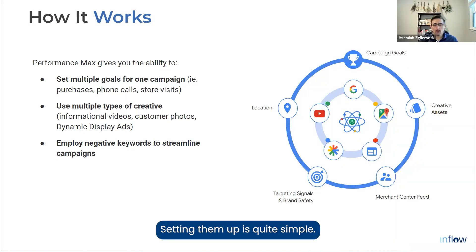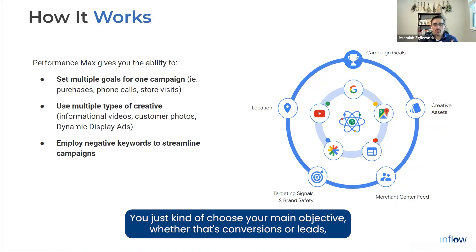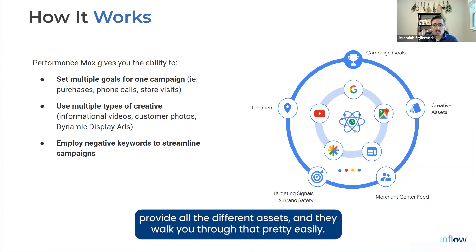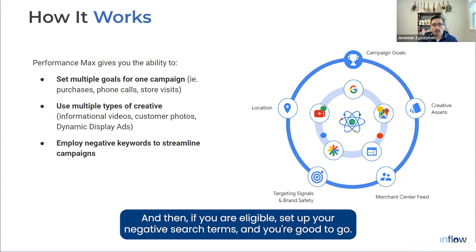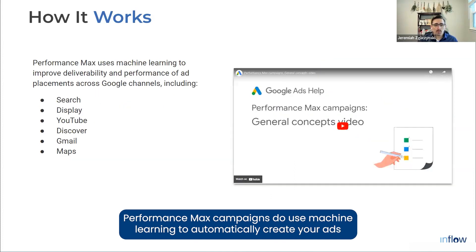Setting up is quite simple — you choose your main objective, whether that's conversions or leads, provide all the different assets, and they walk you through that pretty easily. If you are eligible, set up your negative search terms and you're good to go. Performance Max campaigns use machine learning to automatically create your ads.